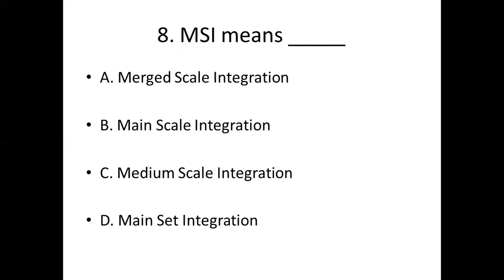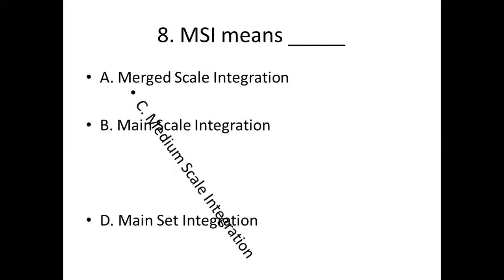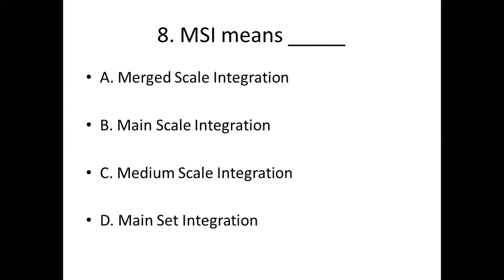Eighth one. MSI means dash. Option A: major scale integration. Option B: main scale integration. Option C: medium scale integration. Option D: main set integration. Answer: Option C, medium scale integration.